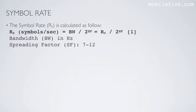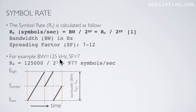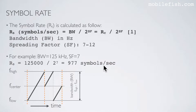The symbol rate is calculated using this equation. We now know that the bandwidth is the same as the chip rate, so the equation can also be written this way. Here's an example: if the bandwidth is 125 kHz and the spreading factor is 7, then the symbol rate is 125,000 divided by 2 to the power of 7 equals 977 symbols per second.